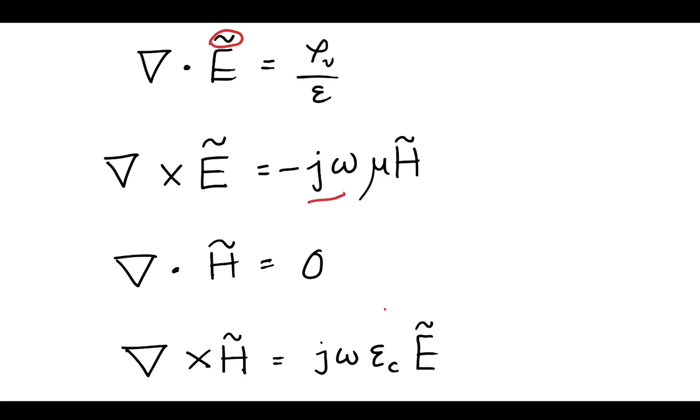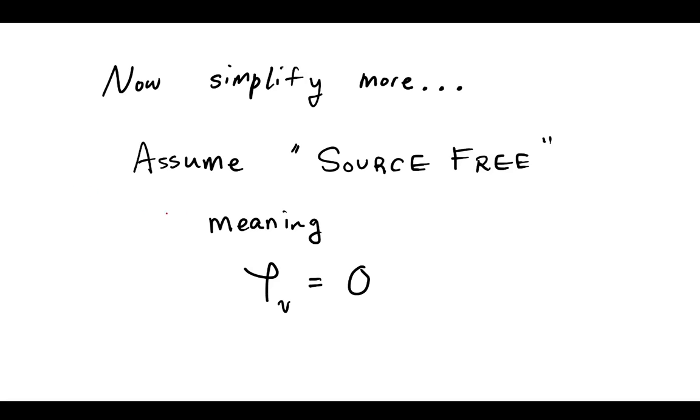In the last video, we defined a complex permittivity. Now let's make one more simplification, which is let's assume that we are in a source-free environment. So this is just imagine you're in space, and there's no excess charges, there's no free charges floating around there, meaning that we can say that the volume charge density is zero.